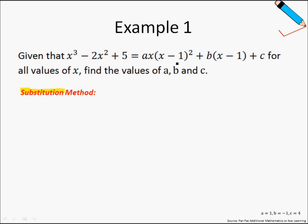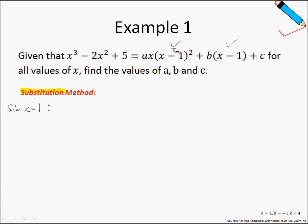Looking at the expression on the right-hand side of the equation, if I were to substitute x equals 1, you will see that this term and this term become 0, because 1 minus 1 is 0. So a and b get eliminated. Let's try it.